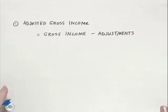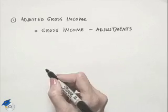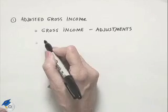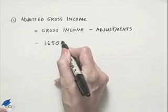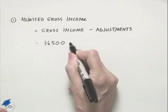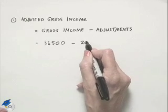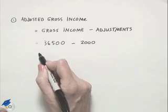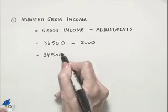We'll begin with the adjusted gross income. To do that, we take the gross income, which in this case was $36,500, and we subtract from it any adjustments, which in this case would be the $2,000 paid to a tax-deferred IRA. So we come up with $34,500.